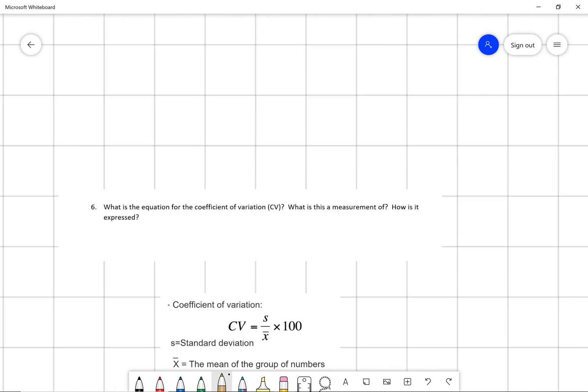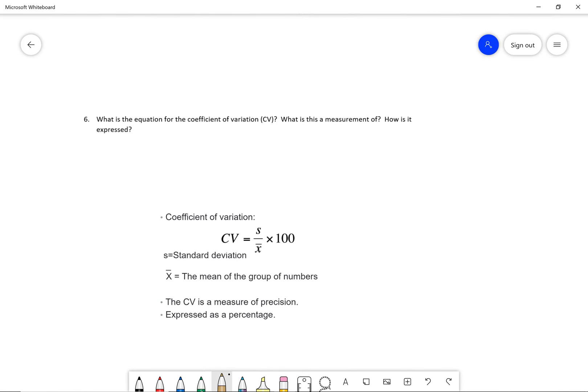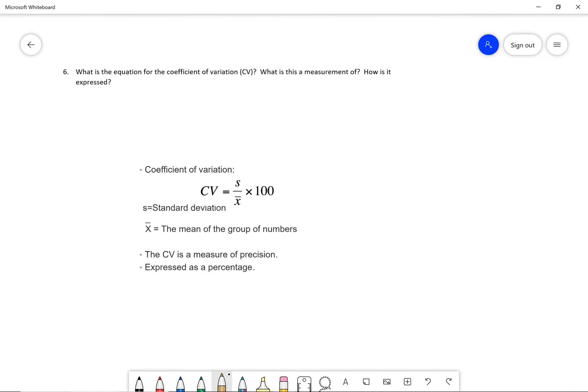And then the next thing that I always like to go into is coefficient of variation. So what is the equation for the coefficient of variation? What is this a measurement of and how is it expressed? So here is your equation for your coefficient of variation. All it is is the standard deviation divided by the mean times 100. It's a measurement of precision and it's expressed as a percentage.